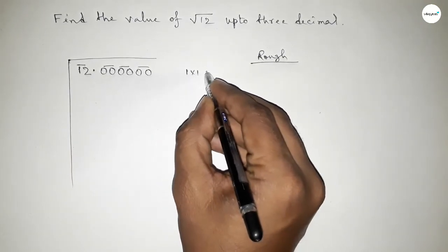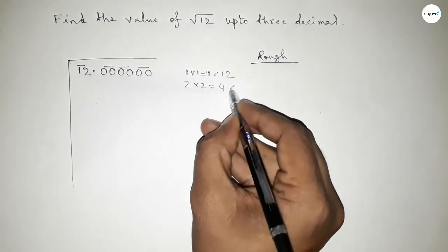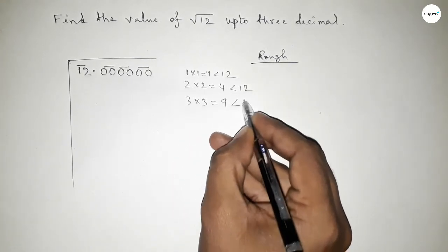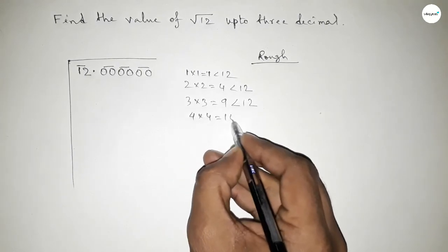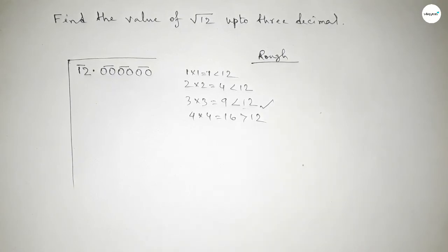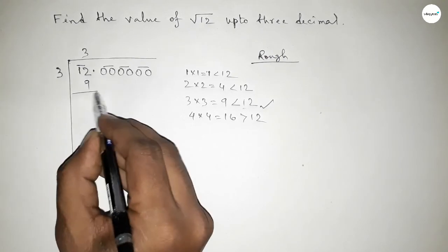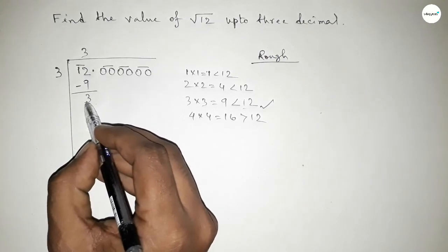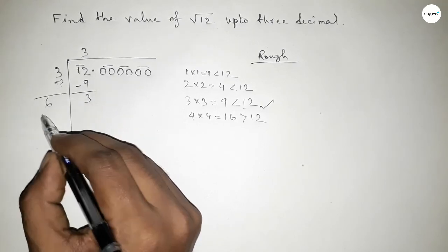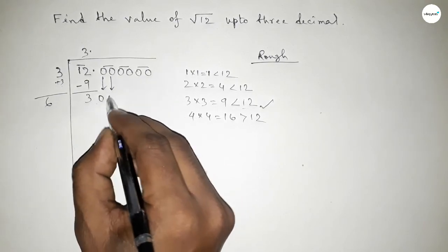So first, what should we put here? We multiply by that which is less than 12. If you put here 1 it is less than 12, if you put here 2 it is less than 12, if you put here 3 it is near 12, but if you put here 4 it is greater than 12. So we should put here 3. Taking here 3, and 3 threes are 9. Now subtracting this, so this is 3, and the last digit is 3.